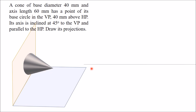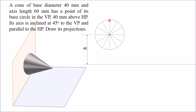First, draw the XY line. At a distance of 40 mm from the XY line, draw another line of length 40 mm which will represent the diameter of the base of the cone. Mark the middle point of this line, and from that middle point as center, draw a circle which is the base of the cone. Now divide this circle into 12 equal parts and mark all these points, including the middle point.